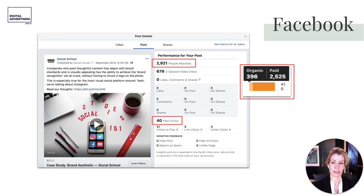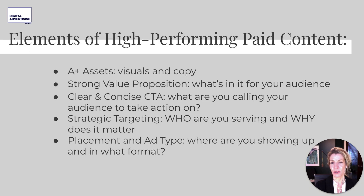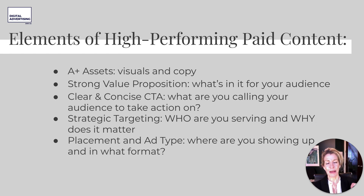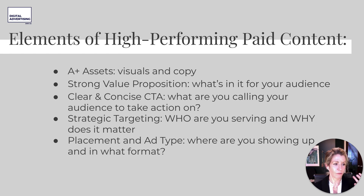What are the elements of high-performing paid content? First, A-plus assets: make sure your visuals and copy are high quality and compelling — not ugly and salesy, but value-driven, resourceful, helpful, funny, shareable. Second, a strong value proposition — does your audience know why this matters to them and why they should care? Third, a clear and concise call to action — 'read more,' 'buy now,' 'sign up immediately' — with scarcity or urgency where appropriate. Fourth, strategic targeting — who are you serving and why does it matter to them? Fifth, placement and ad type — particularly important in full ad campaigns.